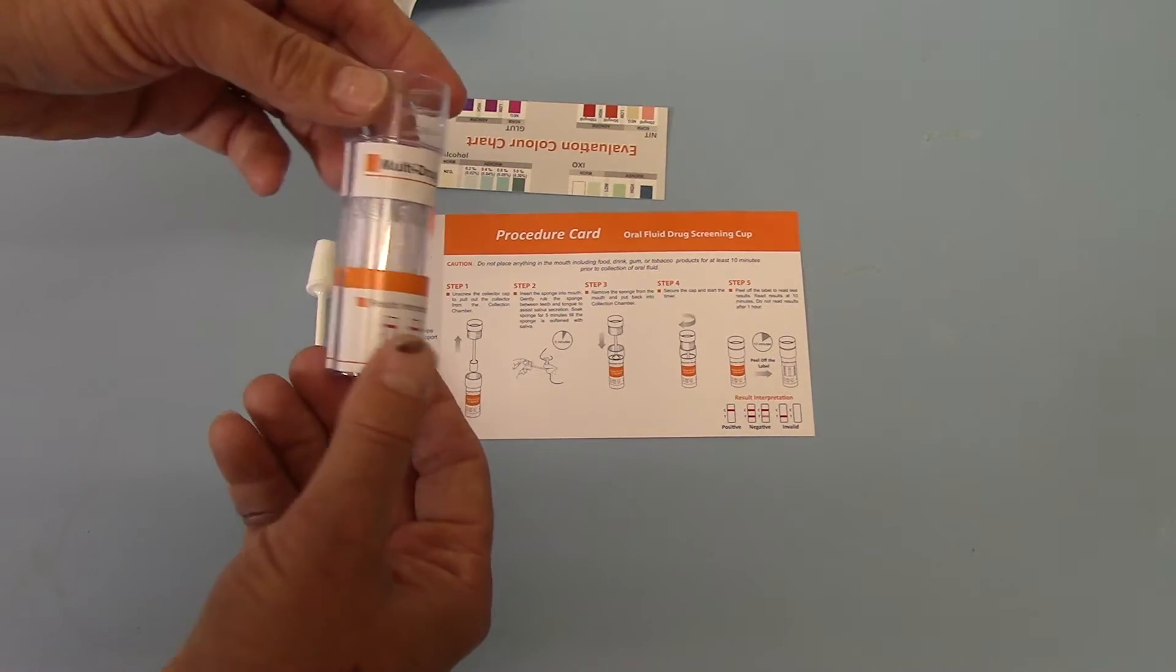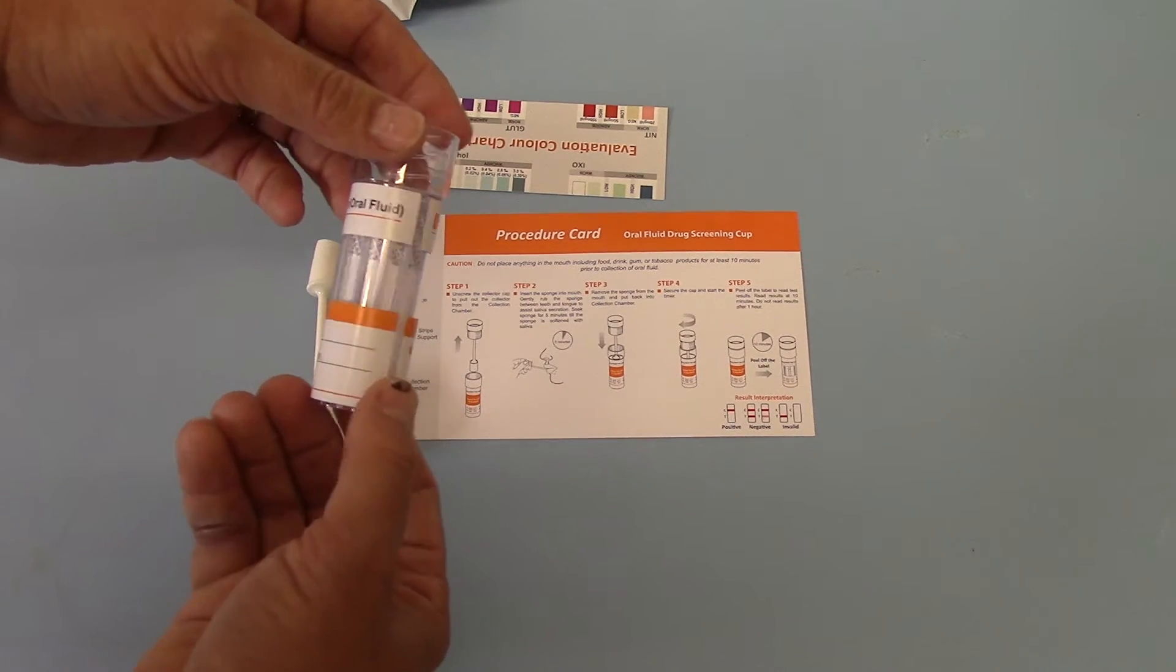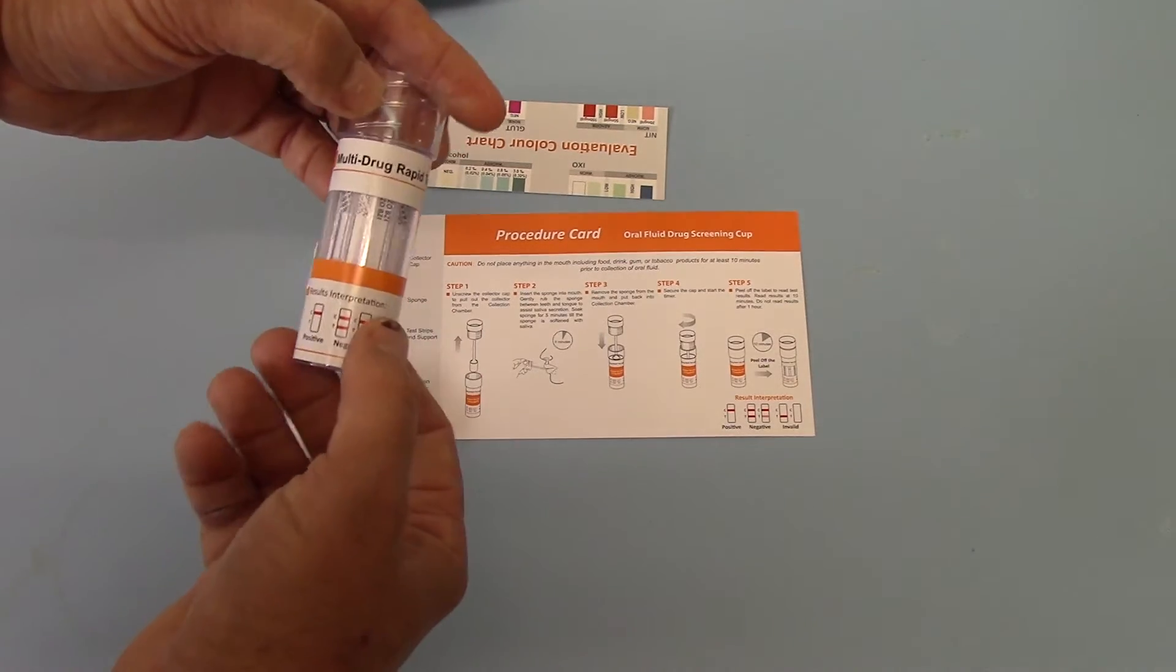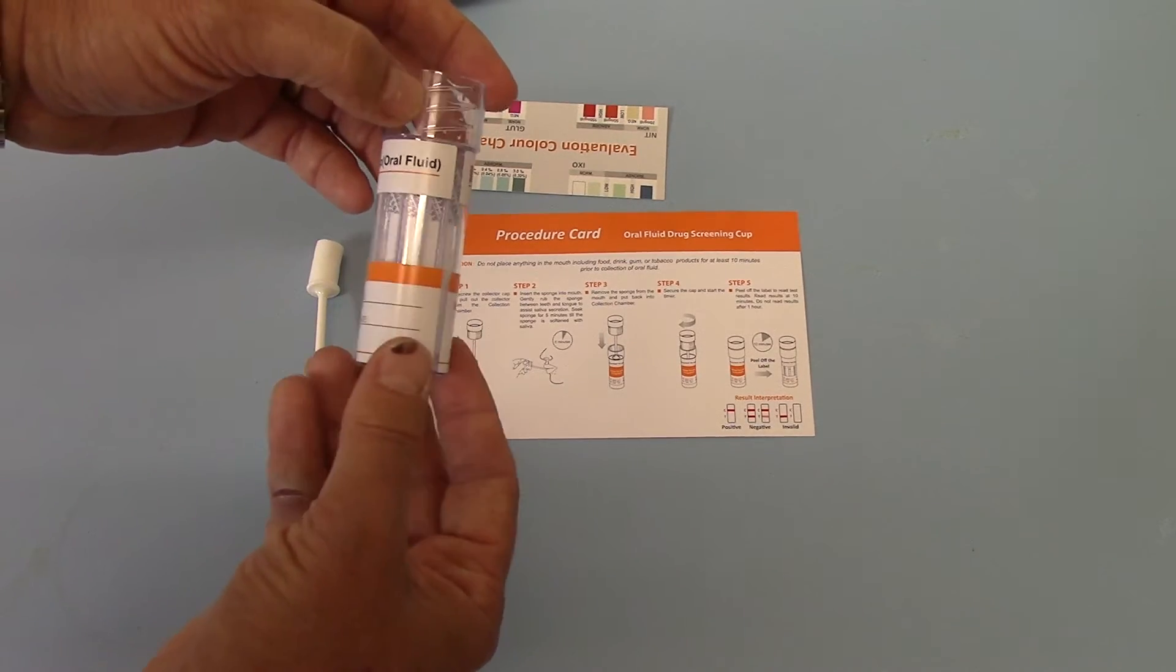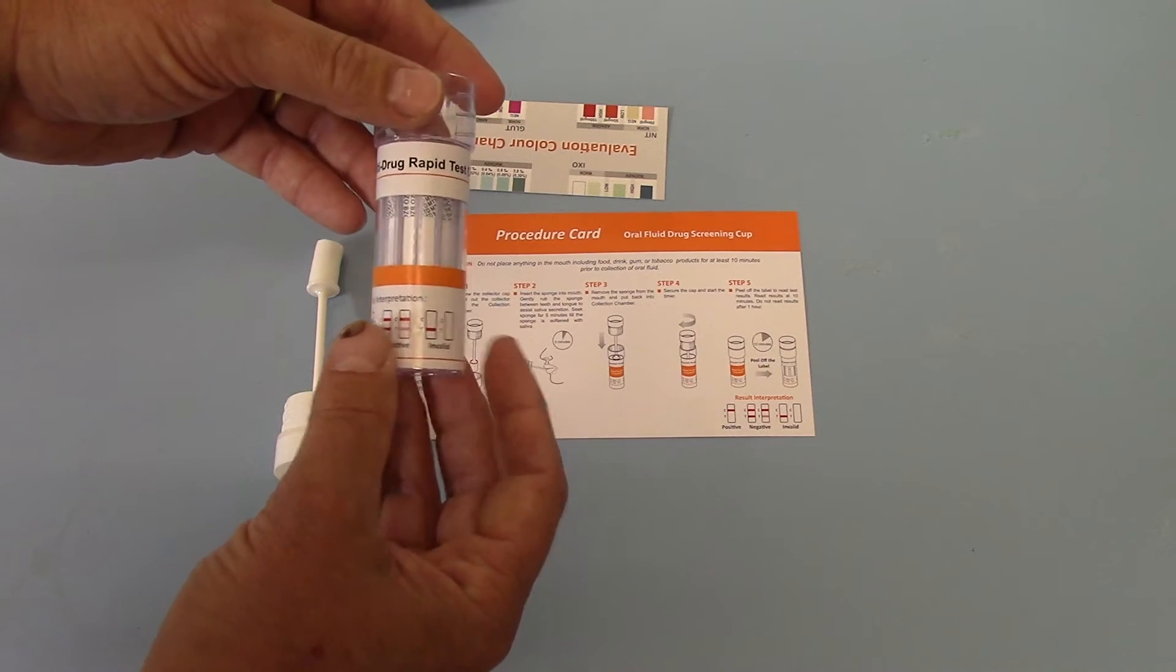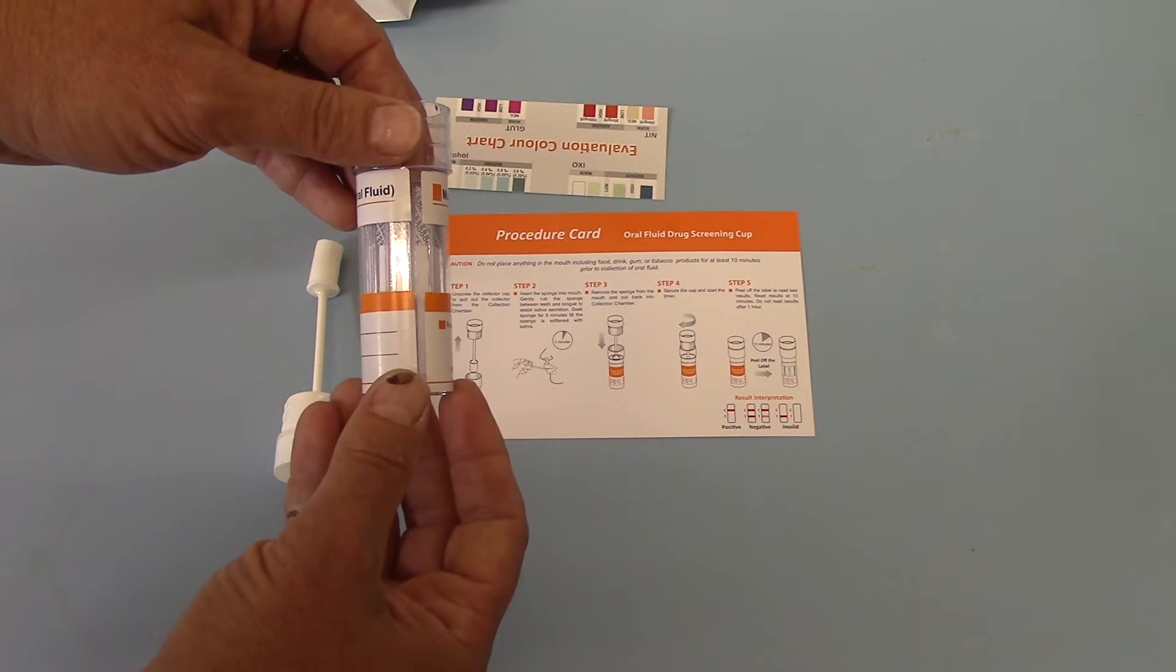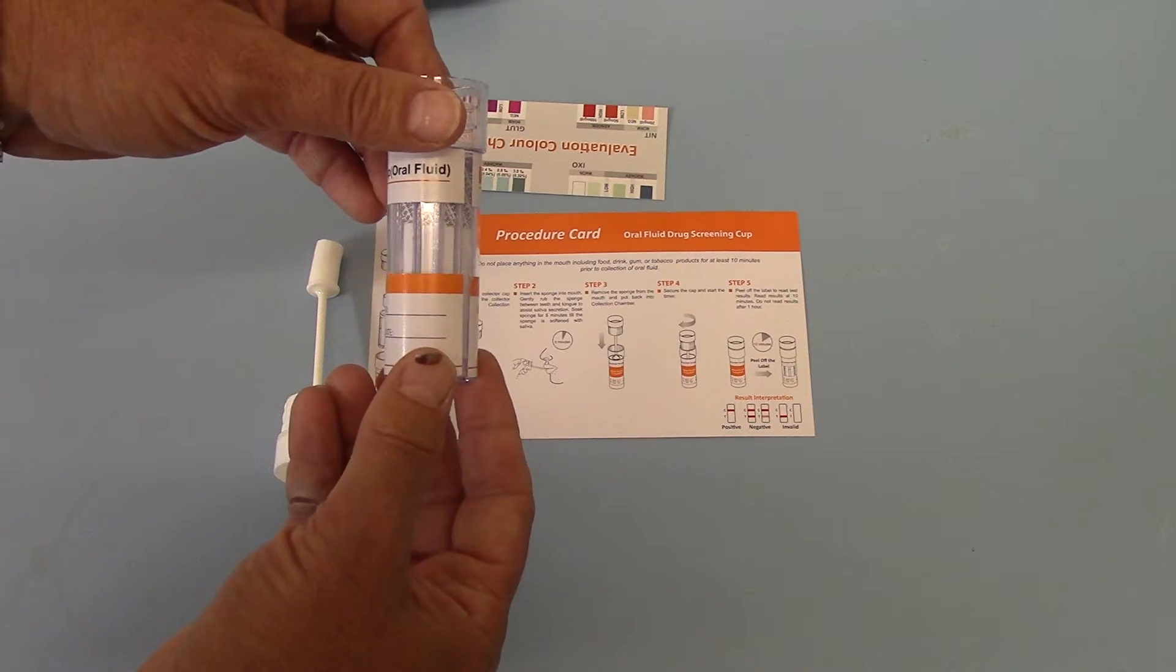For the test results, you will see that around the circumference of the barrel are the 12 test membranes. These have codings on them and the codings on the data sheet relate to the drug abbreviations.